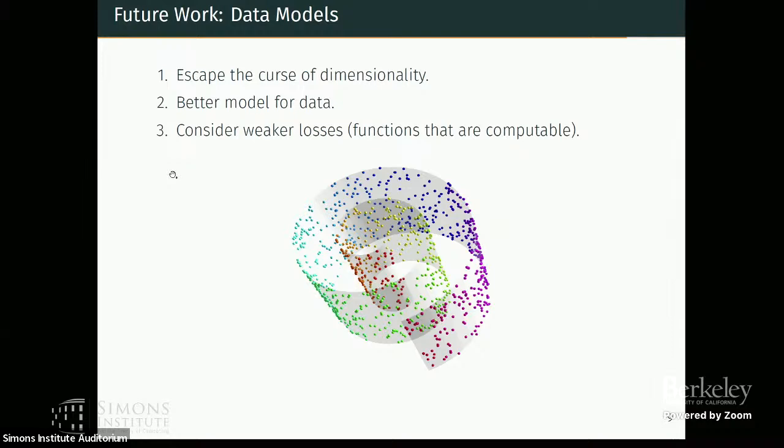And this other thing that is super interesting is what happens if we consider very weak losses? So suppose that I only consider discriminators that have functions that are computable in polynomial time, so polynomial in the dimension, then can we say something? What can we say about the convergence rate? What can we say about computing the global equilibrium?